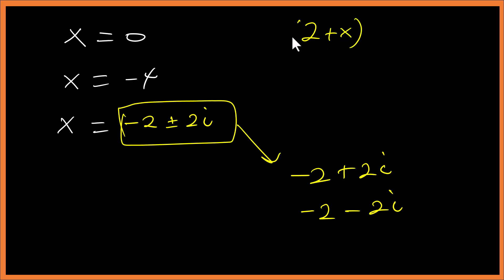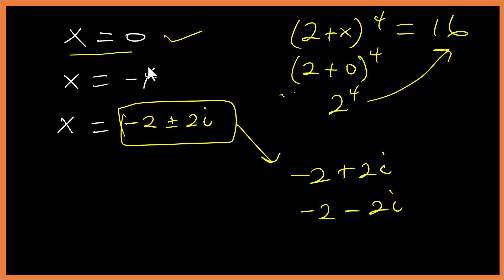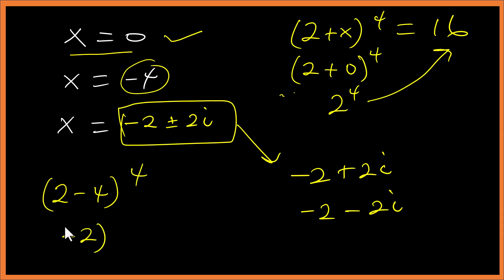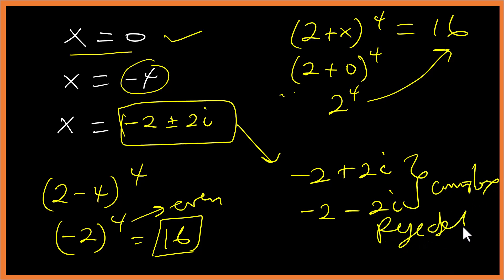Let's verify: for x = 0, (2 + 0)⁴ = 2⁴ = 16. Correct. For x = −4, (2 − 4)⁴ = (−2)⁴ = 16, since the power is even this is positive, so that's also correct. The complex solutions are rejected for real-number answers. Subscribe to this channel for more exciting videos.